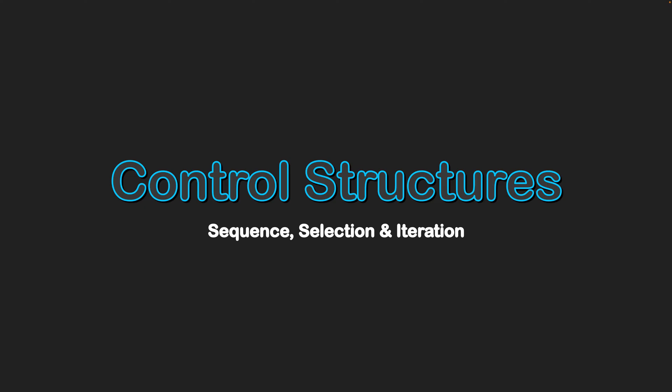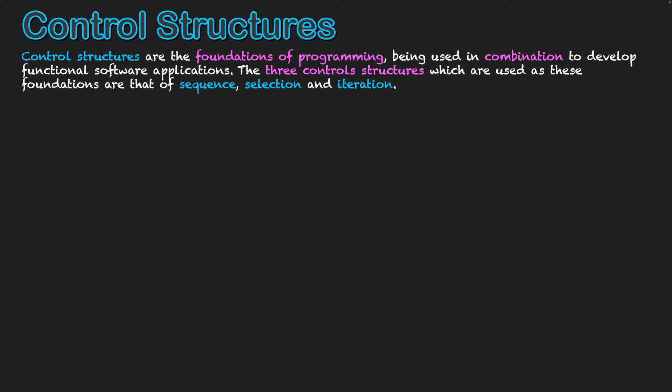Control structures: sequence, selection, and iteration. Control structures are the foundations of programming, being used in combination to develop functional software applications. The three control structures which are used as these foundations are that of sequence, selection, and iteration.